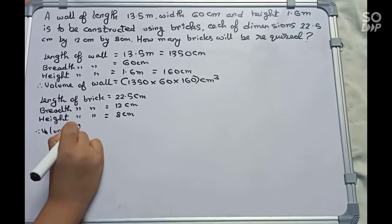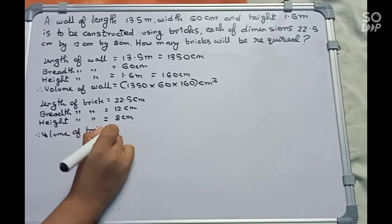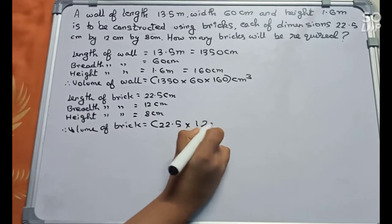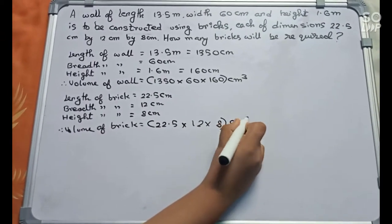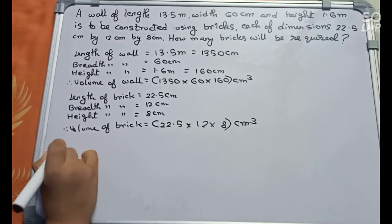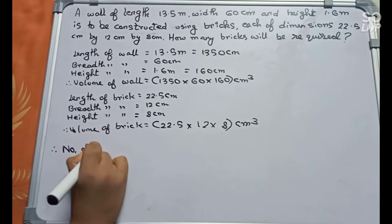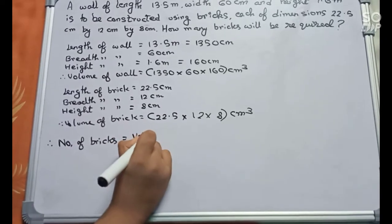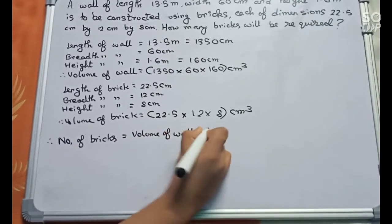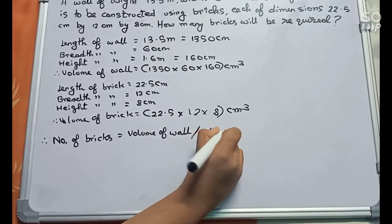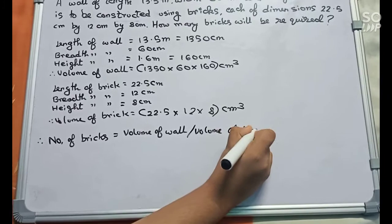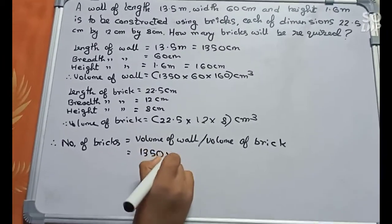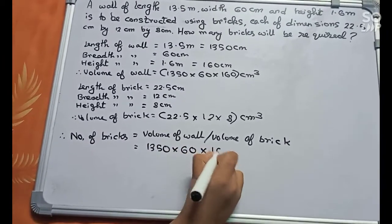Therefore, volume of brick equals 22.5 × 12 × 8 cm³. Number of bricks equals volume of wall divided by volume of brick, which equals (1350 × 60 × 160) ÷ (22.5 × 12 × 8). First we cancel 8 and 160 to get 20, then 12 and 60 to get 5.